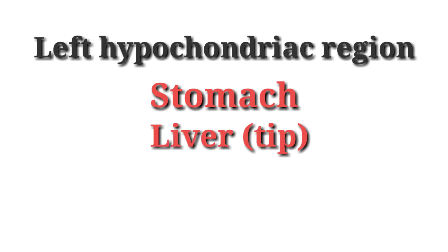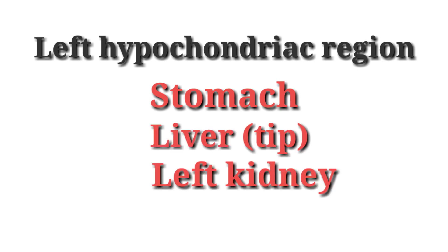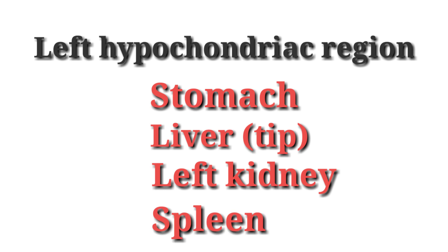The left hypochondriac region is the left upper quadrant of the abdomen. Organs lying in the left hypochondriac region are the stomach, liver, left kidney, and spleen.